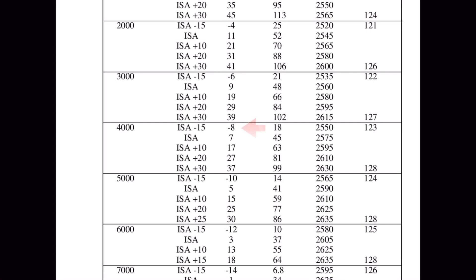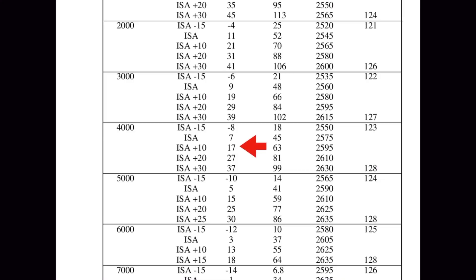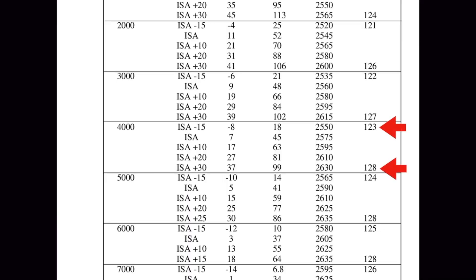Just for fun, let's use interpolation to get a very specific airspeed. Start by subtracting the top and bottom numbers in the temperature column: 37 minus negative 8 equals 45. Then subtract our target value of 17 from 37, which equals 20. Now divide 20 by 45 to get our multiplier, or 0.4444. On the airspeed side, 128 minus 123 equals 5. Multiplying 5 times 0.4444 gives us 2.2222. So 128 minus 2.2222 is approximately 125.78 knots.